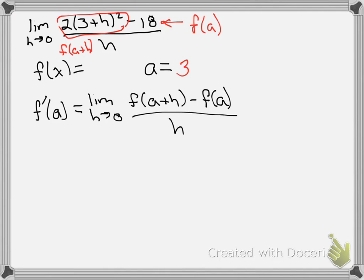So this 3 plus h is what's replacing x in our f of x, so that makes our function 2x squared.